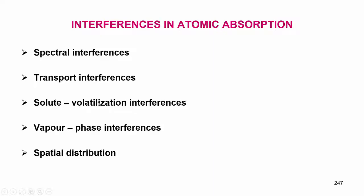Solute volatilization interferences are basically something to do with the viscosity, surface tension, etcetera. Then vapor phase interferences — once the vapors are there in the flame, they will be interacting with each other to produce molecular species such as CH, OH, carbon, and NH radicals. Spatial distribution: depending upon the vapor concentration, the spatial distribution of the atoms will be different, so there will be a change in the absorbance. If the absorbance is different from what is expected, we call it spatial interferences.